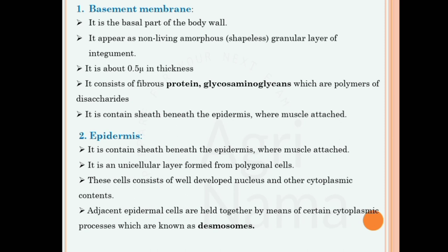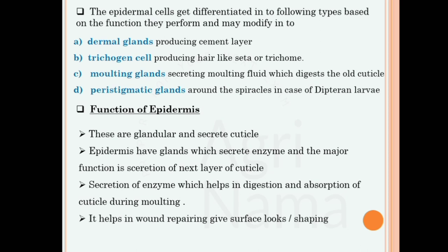Epidermis is a unicellular layer formed from polygonal cells. Their cells consist of a well-developed nucleus and other cytoplasmic contents. Adjacent epidermis cells are held together by means of certain cytoplasmic processes known as desmosomes.